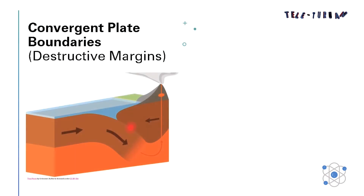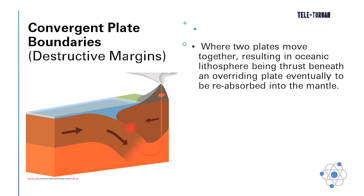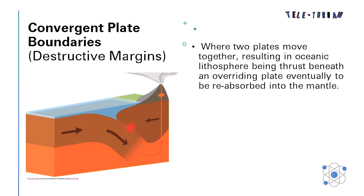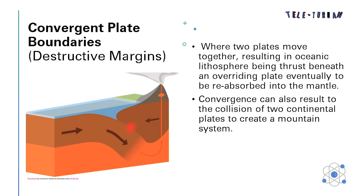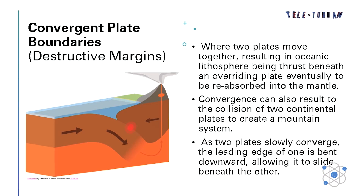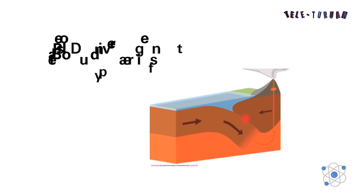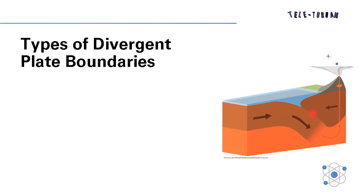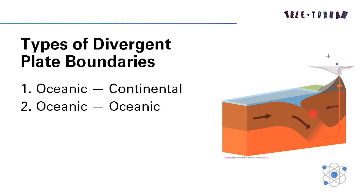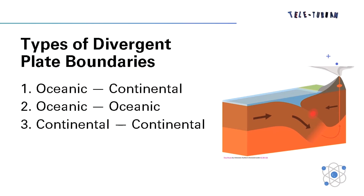Second, we have convergent plate boundaries. This is where two plates move together, resulting in the oceanic lithosphere being thrust beneath an overriding plate, eventually to be absorbed or reabsorbed into the mantle. Convergence can also result in the collision of two continental plates to create a mountain system. As two plates slowly converge, the leading edge of one is bent downward, allowing it to slide beneath the other. There are three types of convergent plate boundaries: oceanic to continental, oceanic to oceanic, and continental to continental.